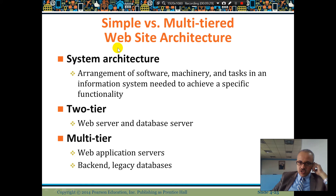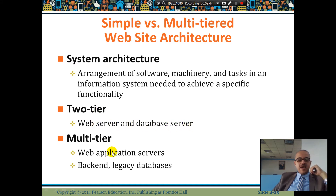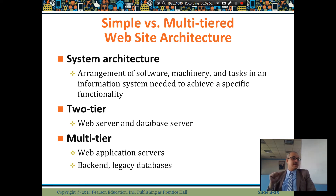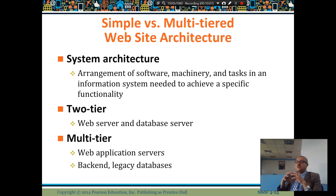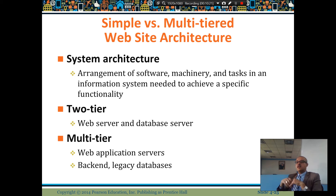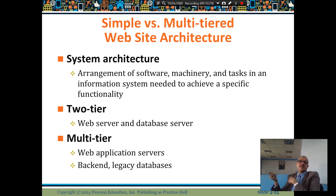System architecture is the arrangement of software, hardware, tasks, and information the system needs to achieve a specific functionality. There's two-tier — web server and database — and multi-tier, which includes web application server and back-end legacy database. For example, in a bank there's a server with all customer account numbers, another server for SMS access, another for ATM, and another for international connections through the Visa network.